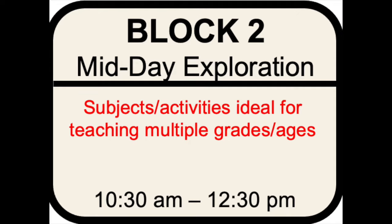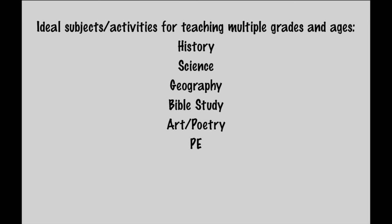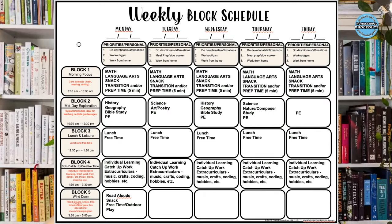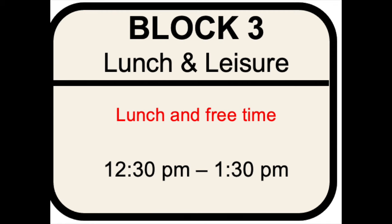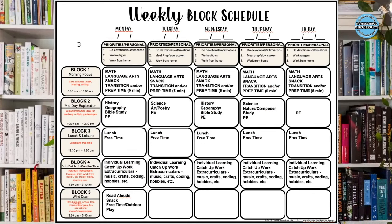Block two is our 'midday exploration' — that's where everyone does work together. These are great subjects for homeschooling multiple ages and grades: history, geography, Bible study, PE, science, social studies. Block three is lunchtime — I call it 'lunch and leisure.' Whatever your kids want to do: silent reading time, PE, free time.